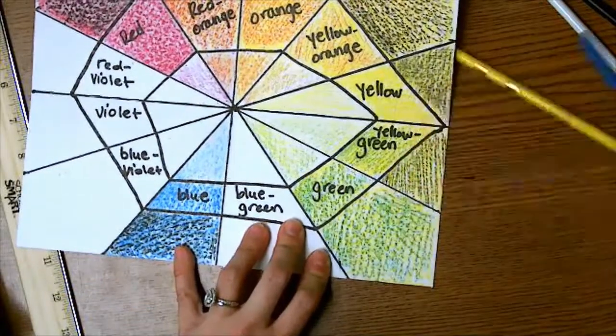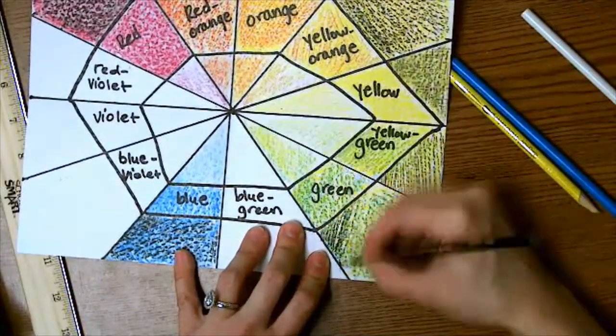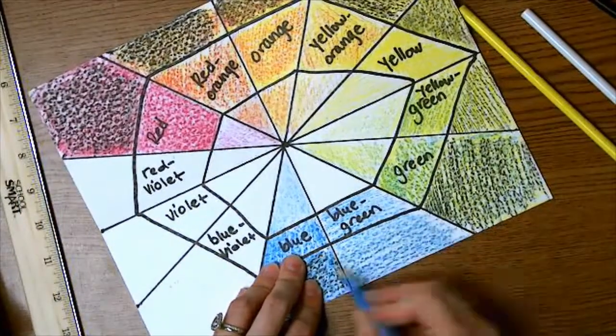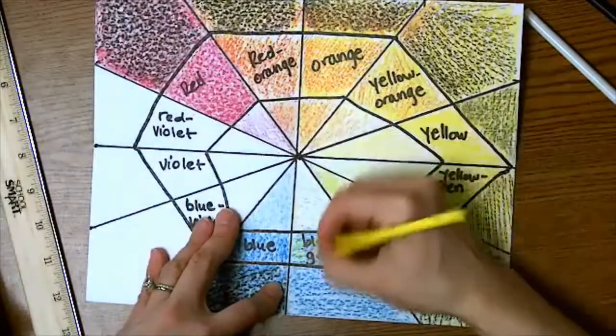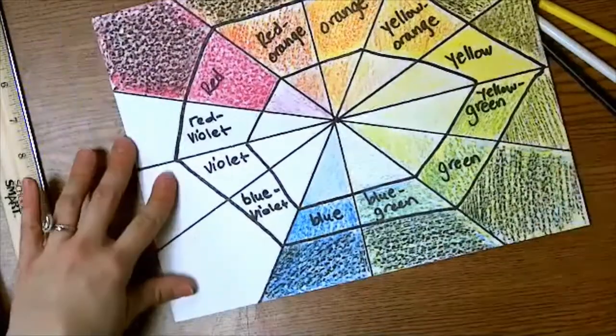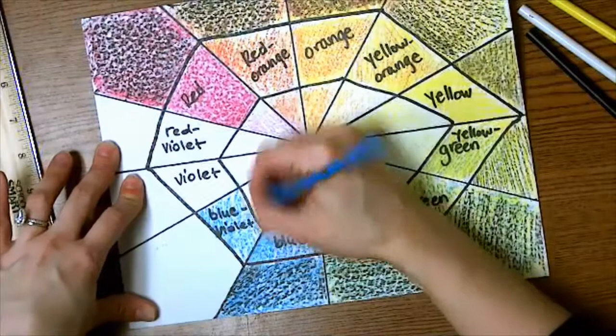I don't want to have the blue overtake my green because it's very easy for the blue to dominate. For the blue green, I started with blue because I wanted there to be more blue than yellow in order to create that really pretty turquoise-y blue green color.